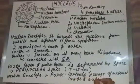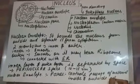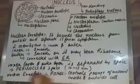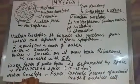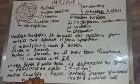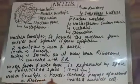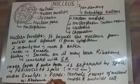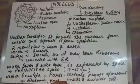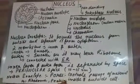Materials such as ribosomes and proteins can pass through these pores. The pores present in the nuclear envelope control what enters and exits the nucleus.